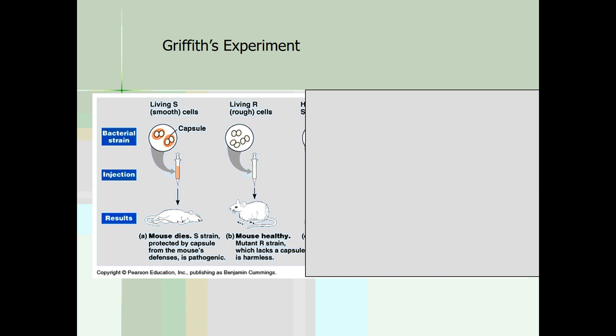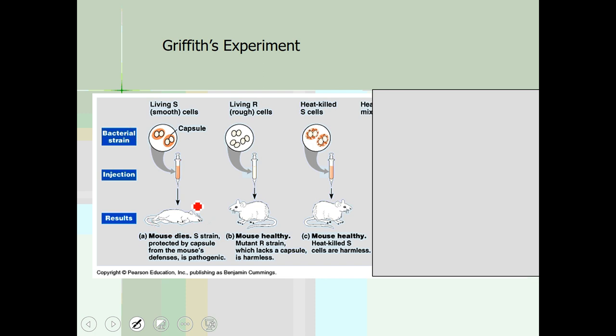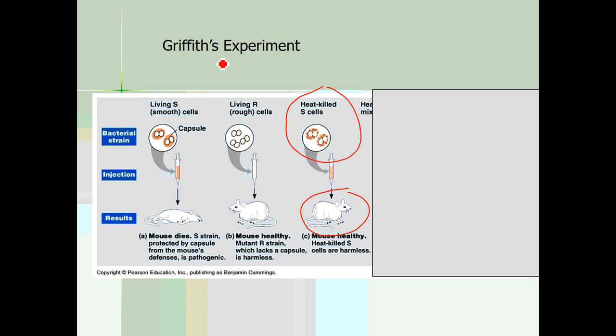Then Griffith took some of the living S cells — the deadly bacteria — and boiled them. He heat-killed them. If you boil bacteria, of course that kills them. When you inject those heat-killed S cells into the mice, the mice survive. Living S cells are deadly. Living R cells are not deadly. And even the deadly S cells, if you boil them, are no longer deadly. Here's where it gets interesting.